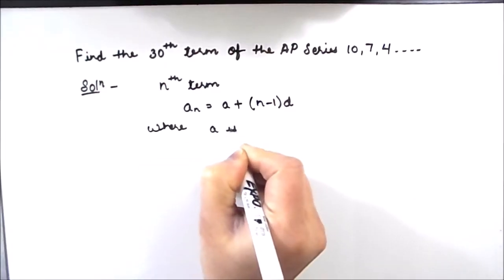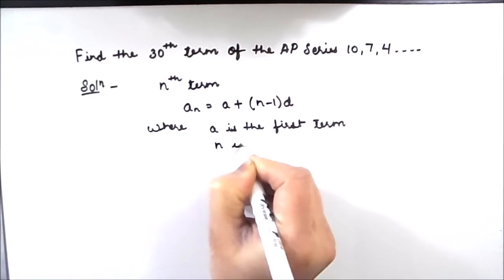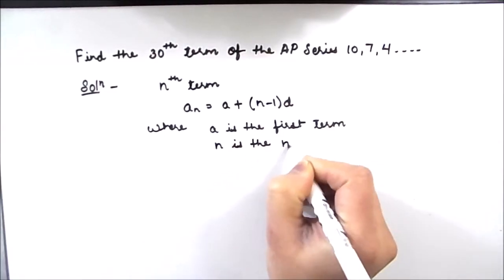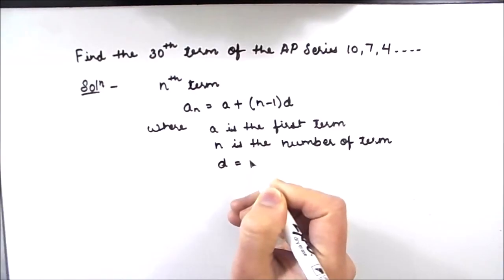Where a is the first term, n is the number of terms, and d is the distance between the terms.